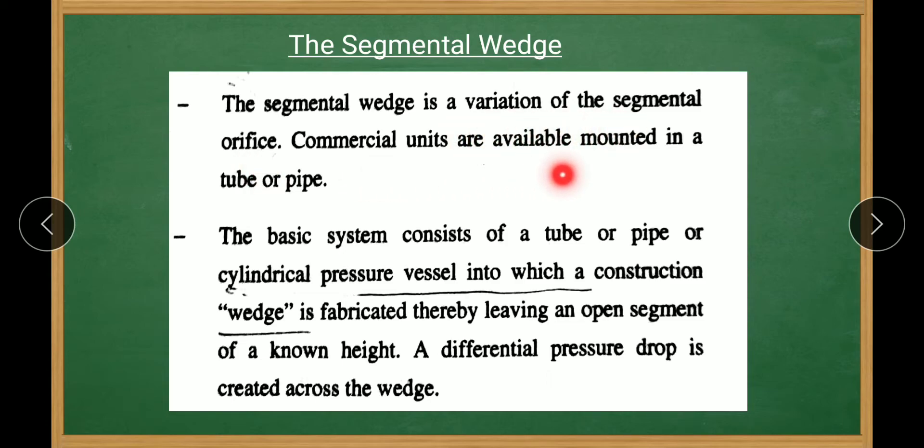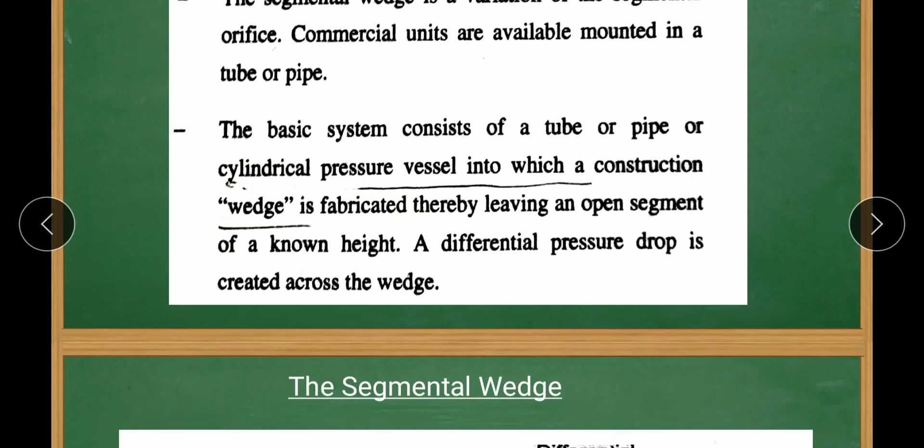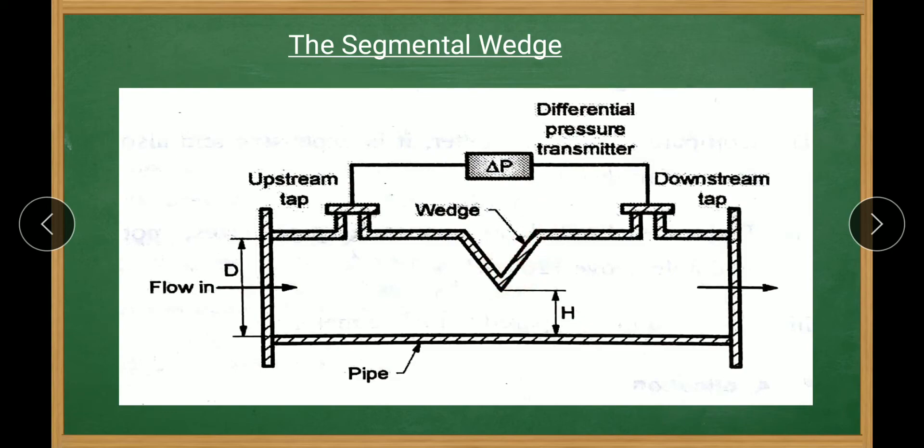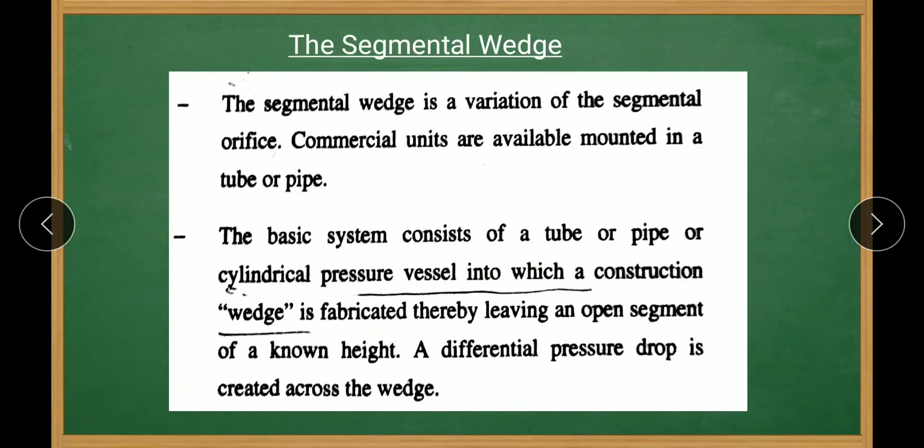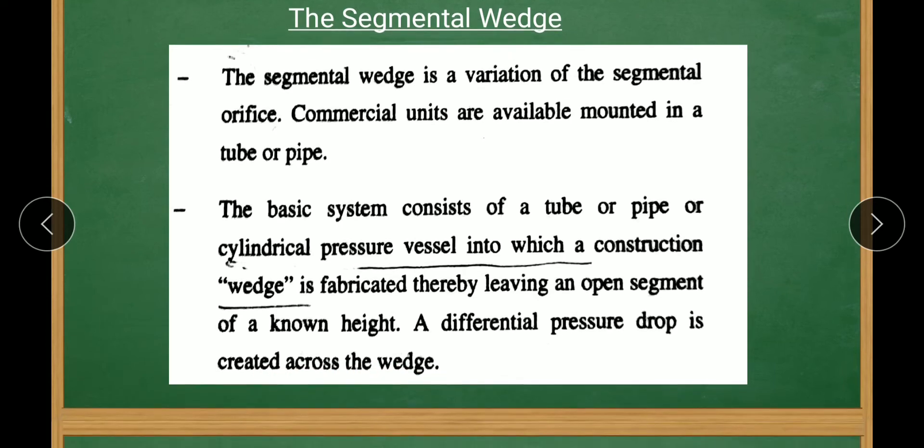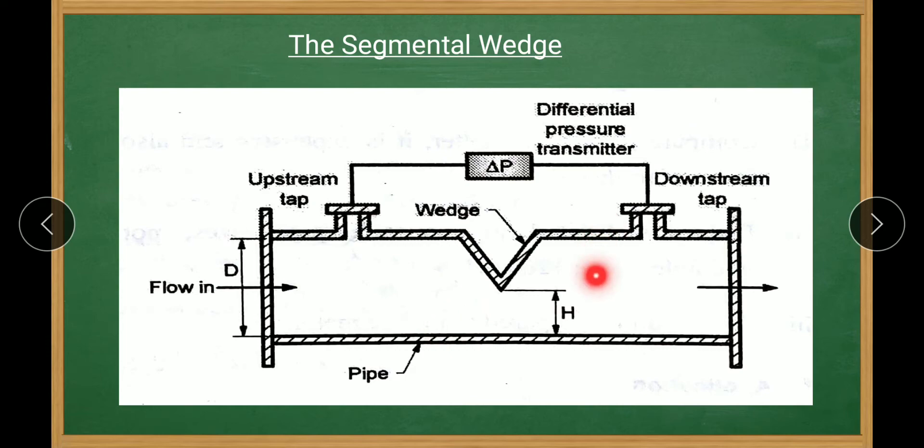The segmental wedge is a variation of segmental orifice. Commercial units are available mounted in tube or pipe. The basic system consists of a tube or pipe cylindrical pressure vessel. A wedge is fabricated, thereby leaving an open segment of a known height. The differential pressure drop across the wedge is measured.